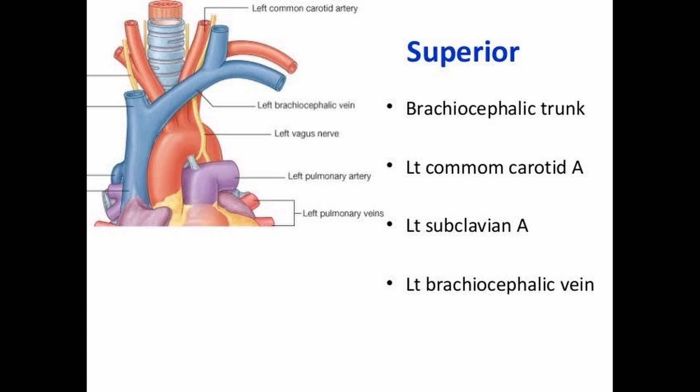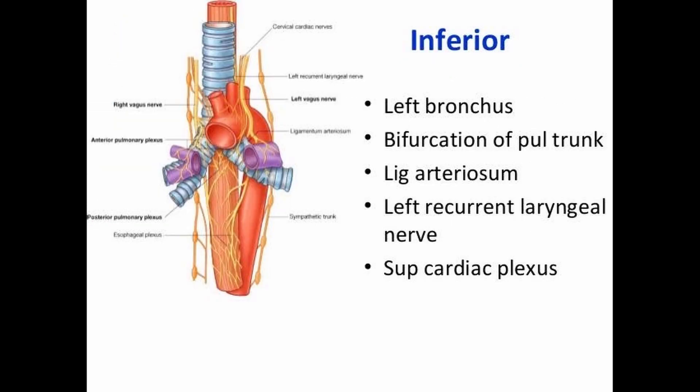The third is the superior relation of the arch of aorta: the brachiocephalic trunk, left common carotid artery, left subclavian artery, and the left brachiocephalic vein. The inferior relations are: the left bronchus, bifurcation of the pulmonary trunk, ligamentum arteriosum, left recurrent laryngeal nerve, and the superior cardiac plexus.